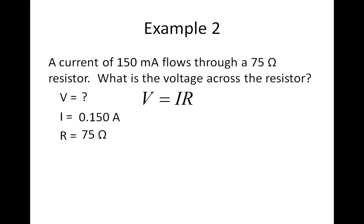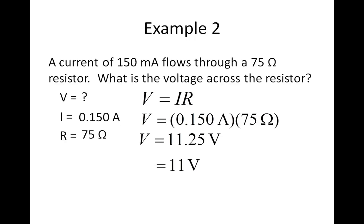I write down my formula. In this case, I'm going to use V equals IR — the standard way of expressing Ohm's Law. Plugging in what I know: 0.150 amps times 75 ohms gives my voltage. It gives a value of 11.25 volts, but I'll round that to 11 volts — two significant digits — because 75 ohms is given to two significant digits.